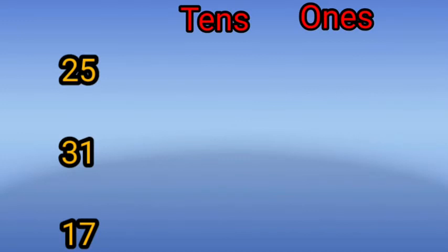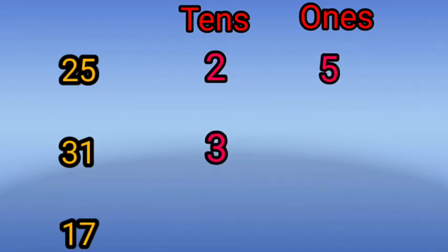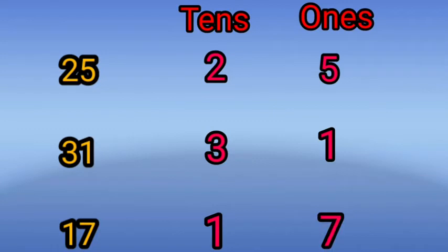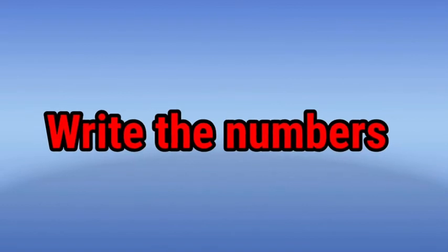Here the numbers are 25, 31, and 17. These numbers are broken into tens and ones: 25 is 2 tens and 5 ones; 31 is 3 tens and 1 one; 17 is 1 ten and 7 ones.